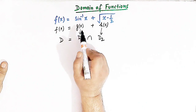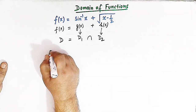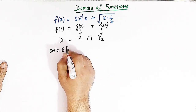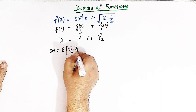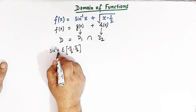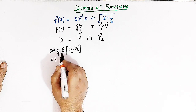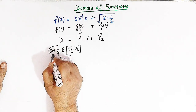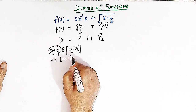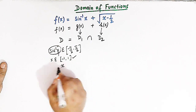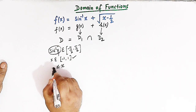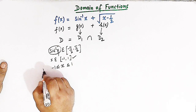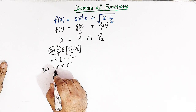From inverse trigonometric functions, we know that sin inverse x belongs to the interval from minus pi by 2 to pi by 2, and this holds whenever x belongs to the interval minus 1 to 1. So the domain of sin inverse x is given by: x is greater than or equal to minus 1 but less than or equal to 1. So d1 is given by this inequality.